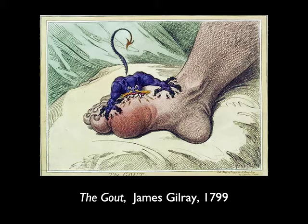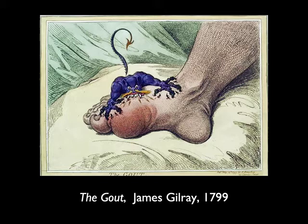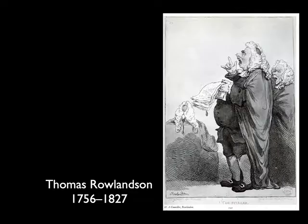Gilray suffered a terrible malady of gout toward the end of his life, and here he did a caricature of a personification of his disease — claws tearing into his flesh, fangs ripping, flames shooting out of its nose. This is the embodiment of gout, a painful and debilitating disease with no cure at the time. James Gilray would die in poverty and madness, but he left behind an intensity of what was possible in caricature that completely altered the field for many years to come.